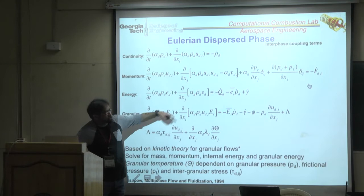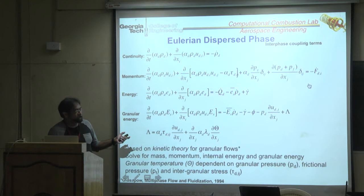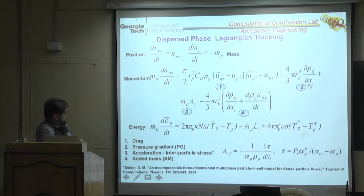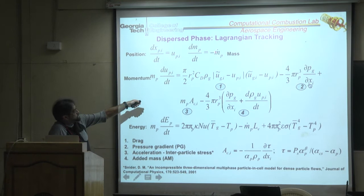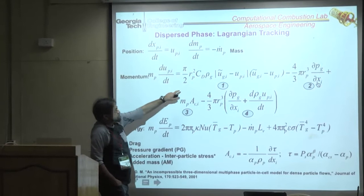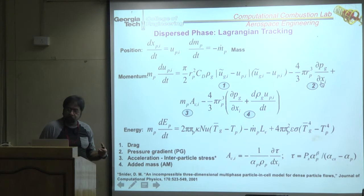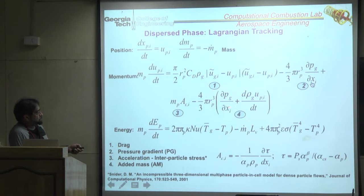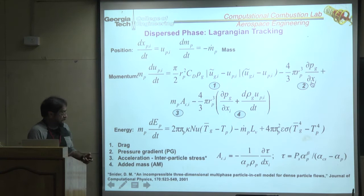Eulerian-Eulerian is accurate only when dense; for dilute it becomes very inaccurate and you must use Lagrangian. The Lagrangian approach has the drag law as the primary force term, plus pressure gradient forces, acceleration effects, and added mass effects that become important when particles are relatively close together.